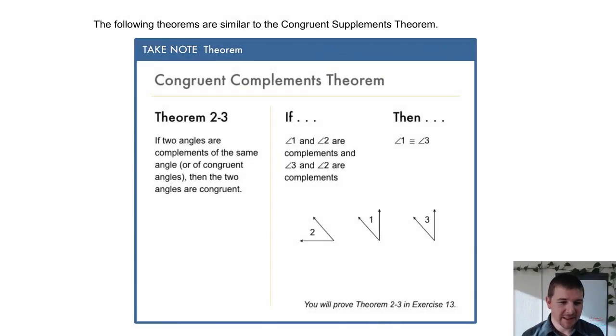Theorem 2-3, the congruent complements theorem, the one that I thought we were going to see a few slides ago, says if two angles are complements of the same angle, or of congruent angles, then the two angles are congruent.